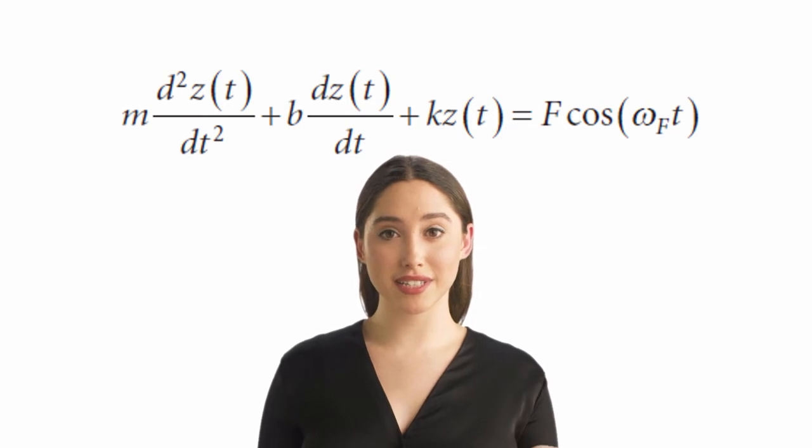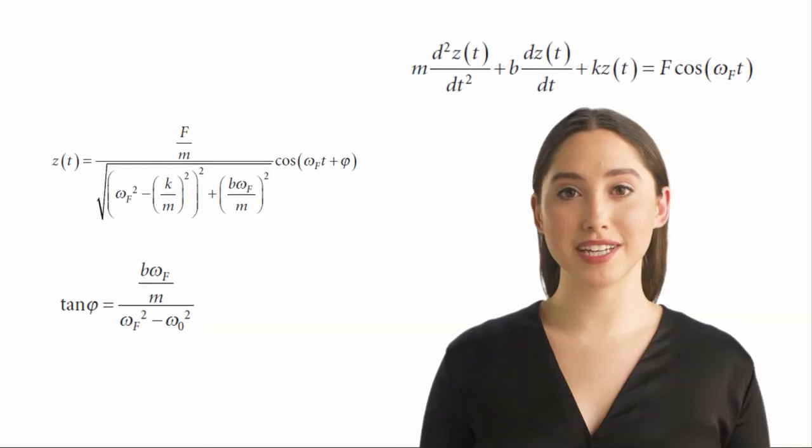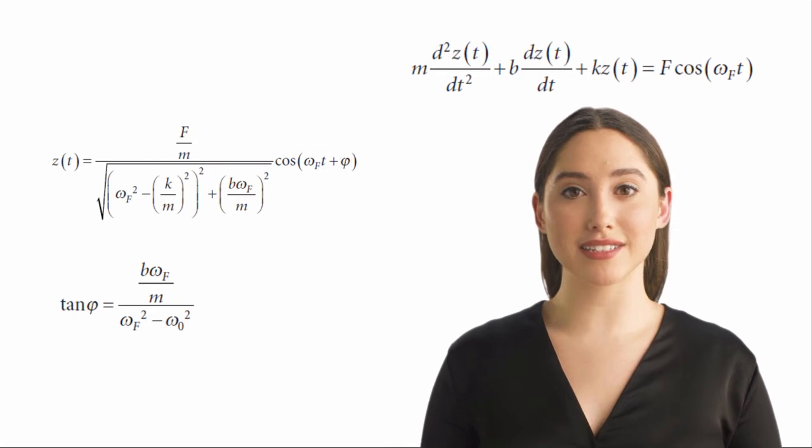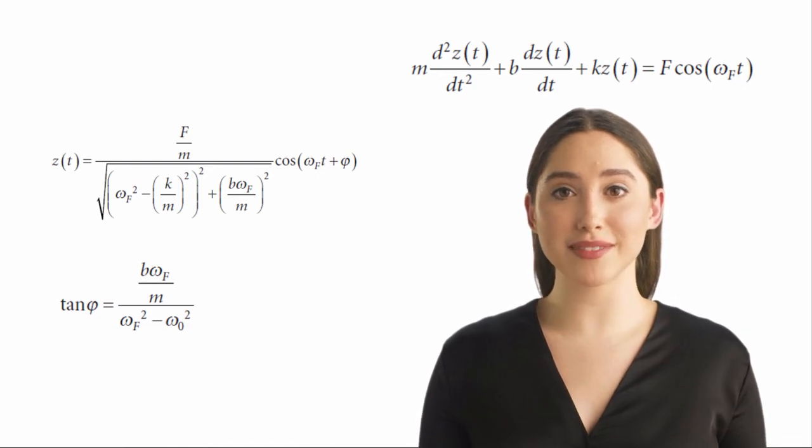In this round, we will skip the calculations that are needed to find the solution to this differential equation. The solution for this learning process is given by, due to phi, the learning outcome z as a function of time will generally not be in phase with the learning pressure f multiplied with the cosine of omega f multiplied by time.